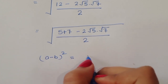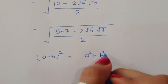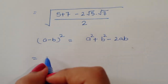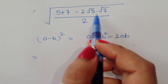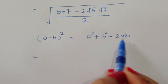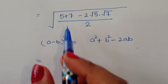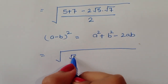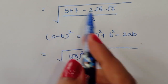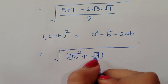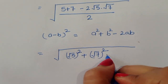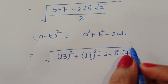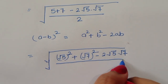We can convert (5 + 7 - 2√5·√7) into the form a² + b² - 2ab. Since 5 is not already a square, we write it as (√5)². So we have: (√5)² + (√7)² - 2·√5·√7, all divided by 2.